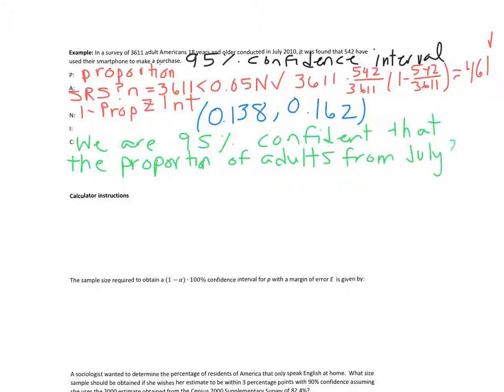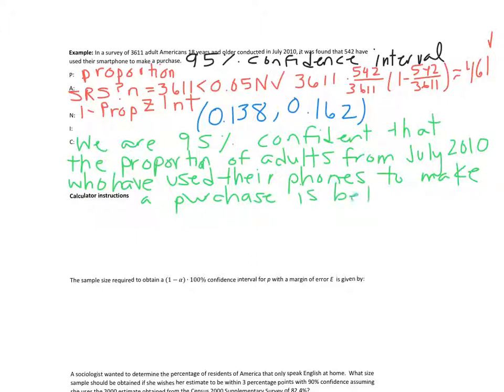That the true proportion of adult Americans from July 2010, I suppose, that makes more sense. It might not be relevant anymore, but perhaps it was relevant in 2010. Who have used their phones to make a purchase is between, and here's our confidence interval, 0.138 and 0.162.